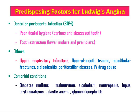The most common predisposing factors for Ludwig's angina are dental or periodontal infections, accounting for around 80% of cases. Poor dental hygiene leading to caries and dental abscess is the most common cause. Tooth extraction, especially of lower molars and premolars, can also lead to Ludwig's angina due to infection of the submandibular space.